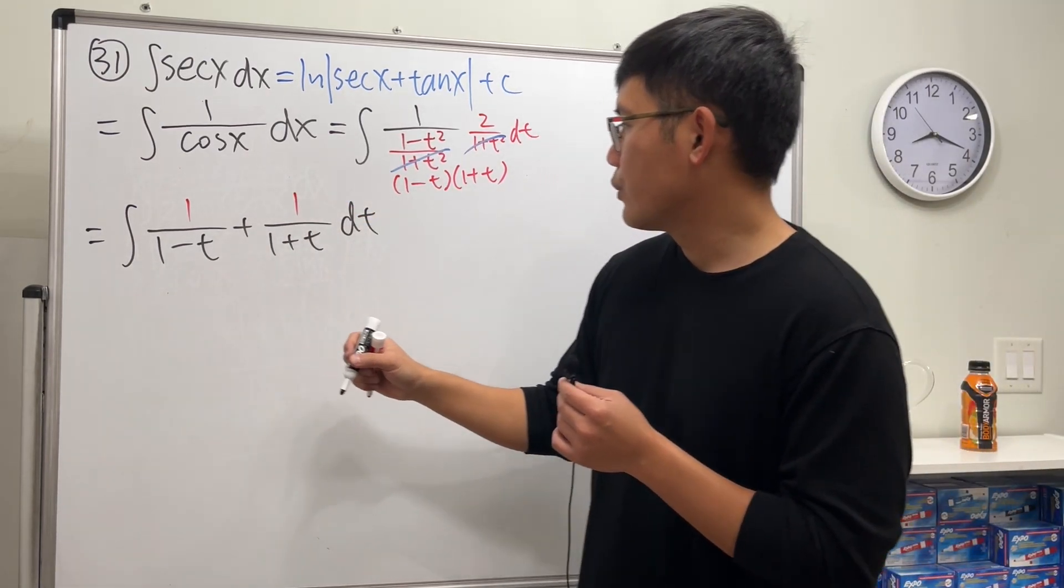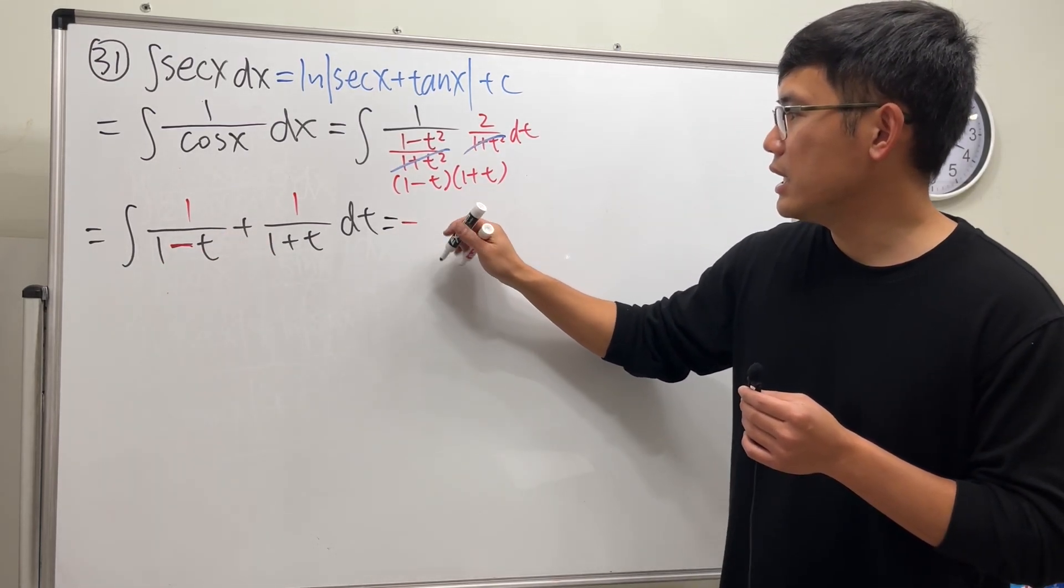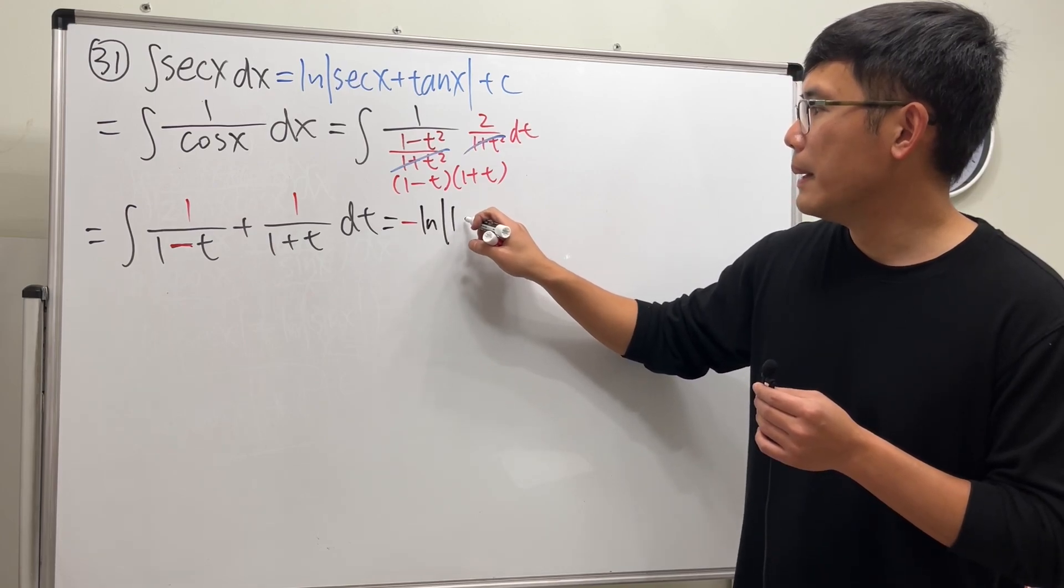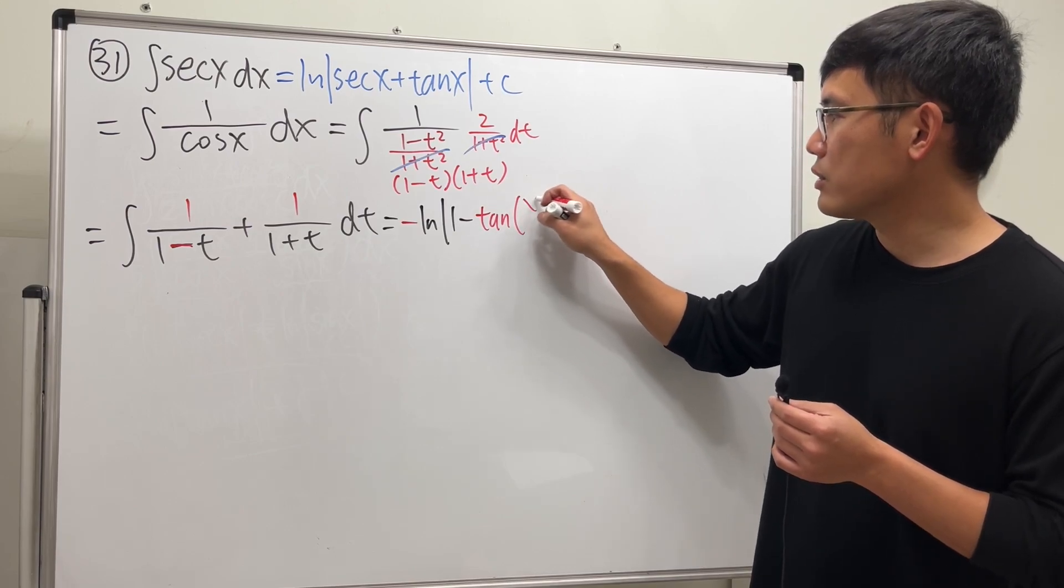Now, integrate this, integrate that. We get, again, here we have the negative, so be careful. Negative ln absolute value of 1 minus t, but t is tangent of x over 2.